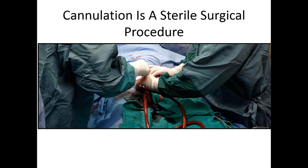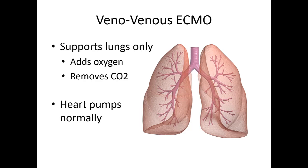One very important thing to note about placing patients on ECMO is that it requires very large cannulas to circulate the large volumes of blood needed to do the work of the heart and lungs. It is a surgical procedure and can be a little bit bloody given the size of the cannulas going into the patient's groin. It takes a very highly skilled and trained person to place them in the correct position. There are two types of ECMO — and this is where ECMO got its start.